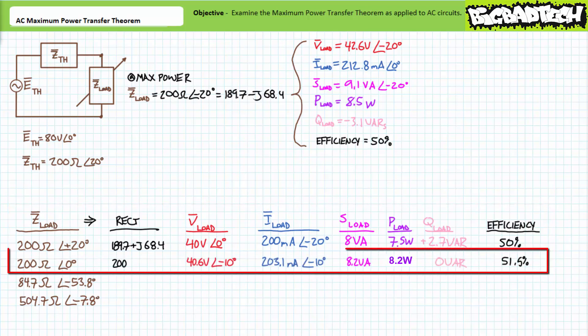In the occasion when the variable load impedance is 200 ohms at an angle of zero — a purely resistive load — we again might anticipate reactive power not canceling as in the maximum power condition, resulting in less real power. The voltage divider rule suggests voltage across the load will be 40.6 volts at an angle of negative 10 degrees; AC Ohm's law suggests current through the load will be 203.1 milliamps at an angle of negative 10 degrees. Given the purely resistive load, voltage and current appear in phase with each other. The AC power formula suggests the load experiences 8.2 volt-amperes of apparent power, 8.2 watts directed towards real power, and zero VARs reactive. Efficiency in this scenario is roughly 51.5%.